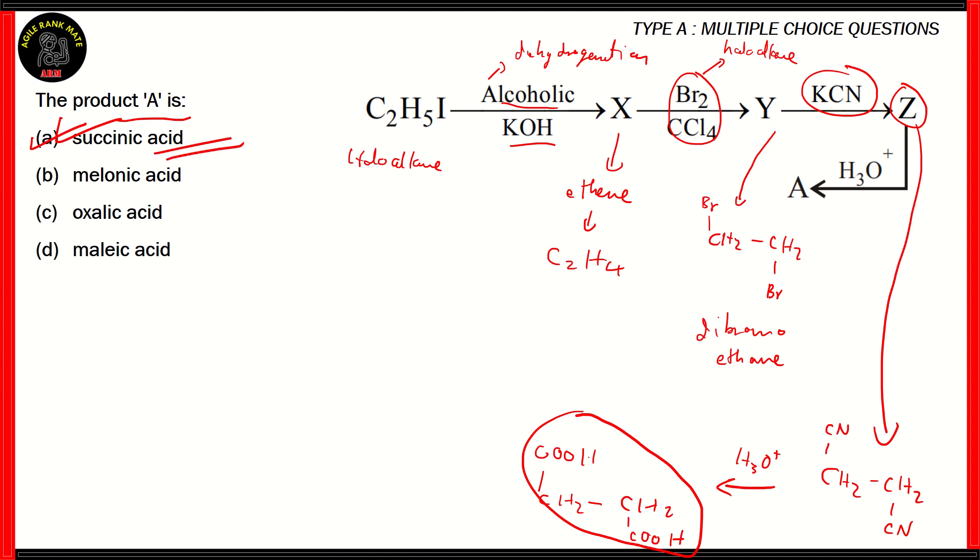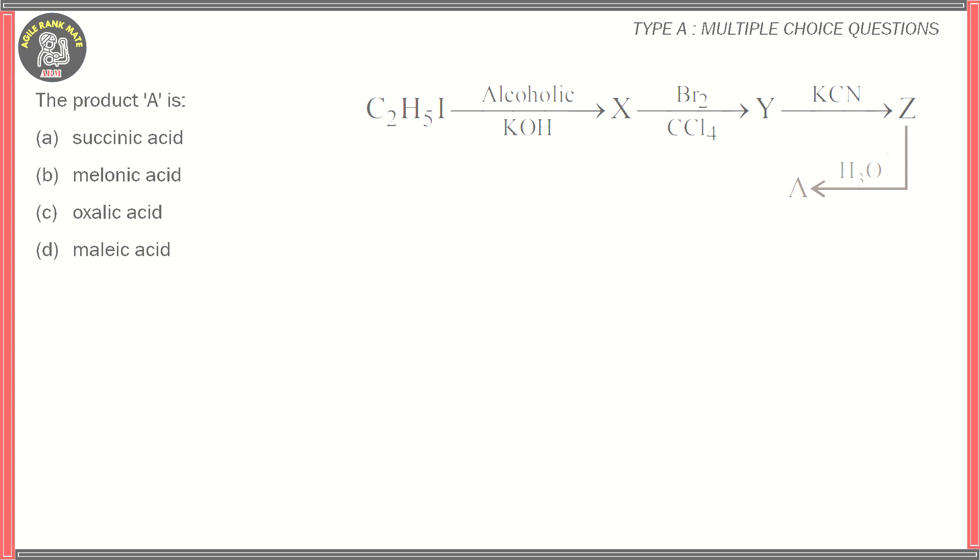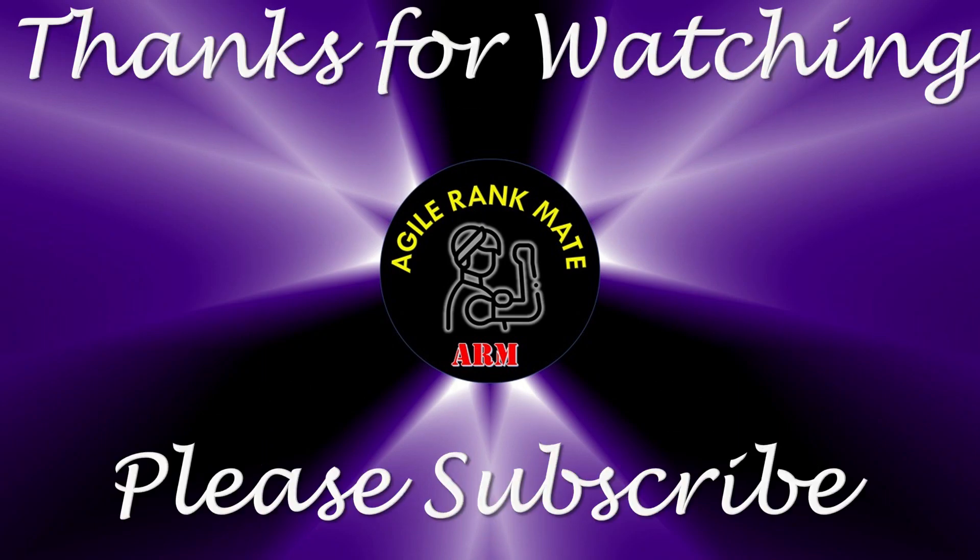Now this is what we call option A succinic acid. So option A succinic acid turns out to be the right option. Now that concludes this episode of Viti Workshop. We hope you found this episode interesting. For more of our useful and interesting content, don't forget to subscribe to Agile Rank Mate for your partner in education. If you want to get the latest updates from our channel then please don't forget to hit the bell icon present below. So until the next webisode, take care, stay alert, bye bye for now.